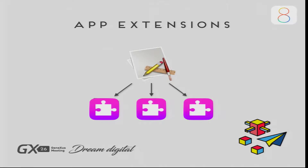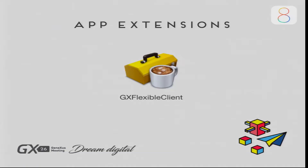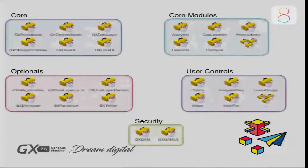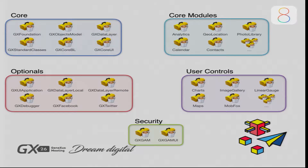With regard to the architecture of the extensions, although the extensions are contained inside the application, they are separate binaries and one application can contain several extensions. They have to be light, consume less resources, and work quickly. What we used to have in GeneXus was the flexible client for Smart Devices or iOS. In previous versions of GeneXus, we had a monolithic structure which was very heavy. So what we did in GeneXus 15 was to re-architect the extensions, and we now have a modular architecture.